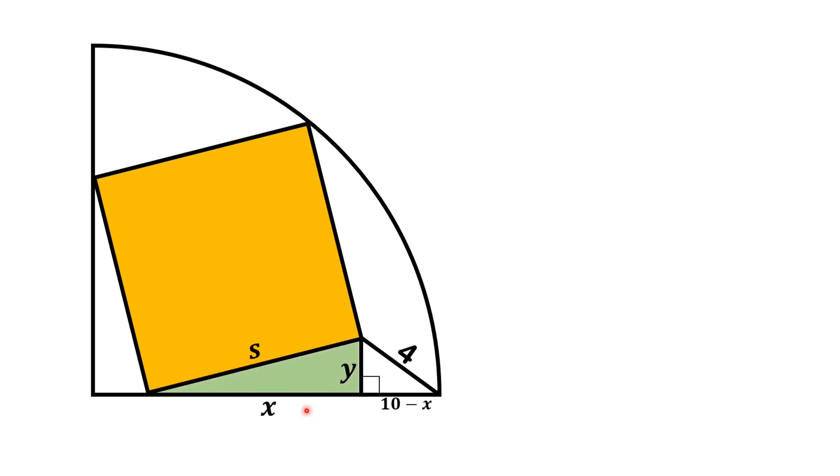Now, from this green triangle, as this is a right triangle, we can write x square plus y square is equal to s square by Pythagoras theorem.